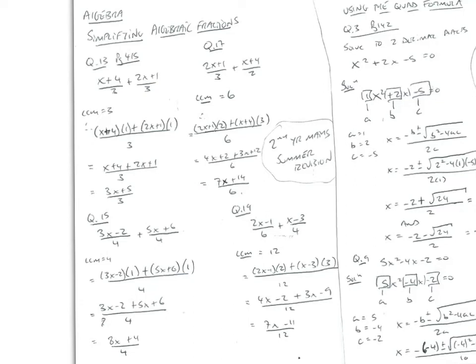Let's look at simplifying algebraic fractions: (x+4)/3 + (2x+1)/3. The first thing to do is look for the lowest common multiple of 3 and 3, and that is 3.